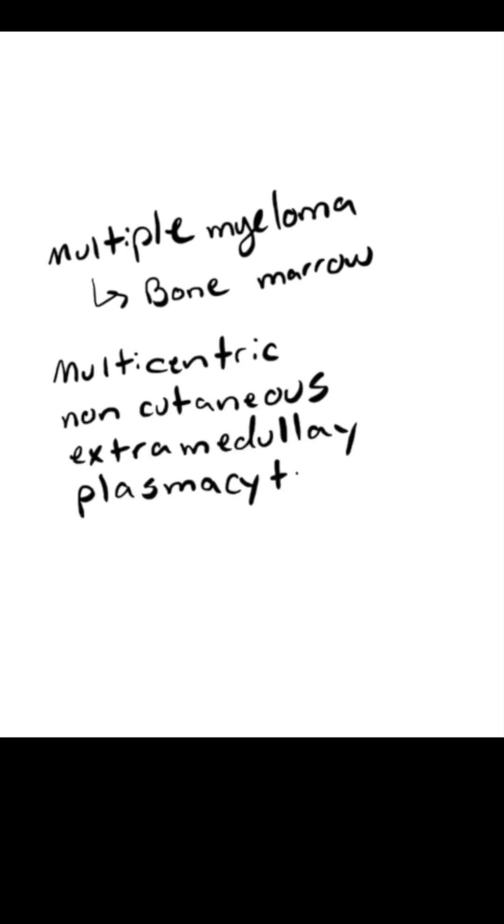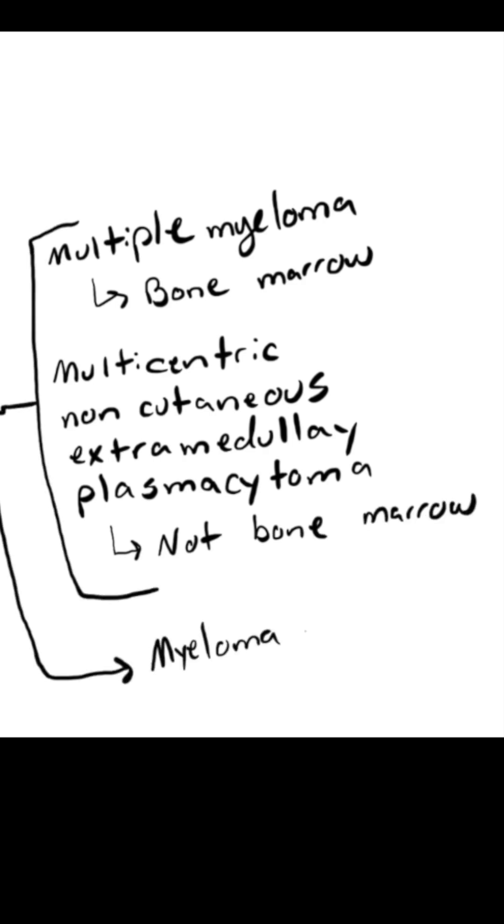Interestingly, the study points out that in cats with myeloma-related disorders, it's more common to see involvement of abdominal organs like the spleen or liver, without a large number of abnormal cells in the bone marrow. In fact, previous studies have frequently reported infiltration of the spleen or liver and atypical plasma cell appearance in cats with these disorders, even when bone marrow involvement wasn't significant.